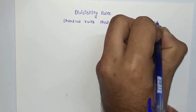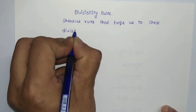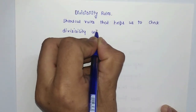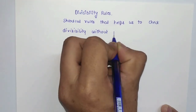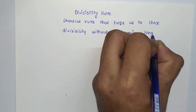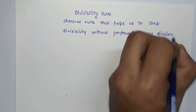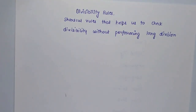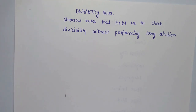Divisibility rules are shortcut rules that help us check divisibility without performing the long division process. This is very helpful when a very large number is given and we need to perform the division quickly. We don't need the actual quotient or remainder — we just need to check whether that number is divisible by another number or not.